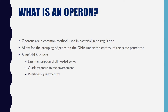An operon is a group of functionally related genes that are grouped together on DNA and are under the control of one promoter. In an operon, the genes are transcribed as one single long mRNA transcript. The mRNA is then translated into the different proteins encoded by the genes. This method allows bacteria to regulate gene products for a specific function with just one set of transcription factors.